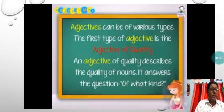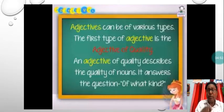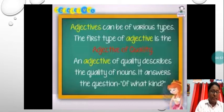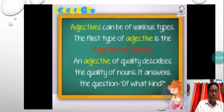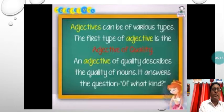Mohan is a polite boy. What kind of boy is Mohan? The answer will be polite. This is a big glass — what kind of glass is it? A big glass. So, big is answering the question of what kind? An adjective of quality answers the question of what kind.